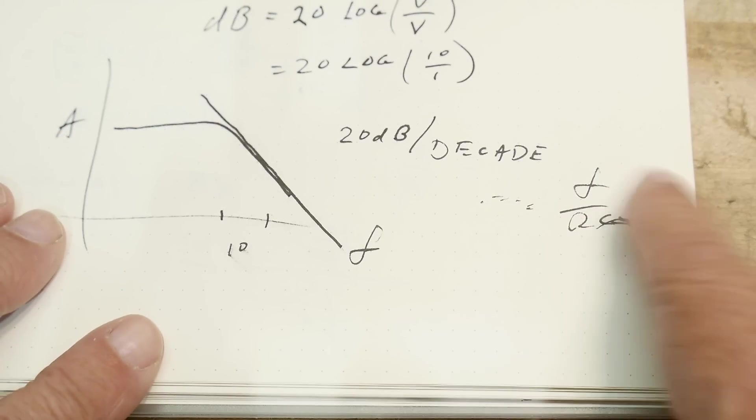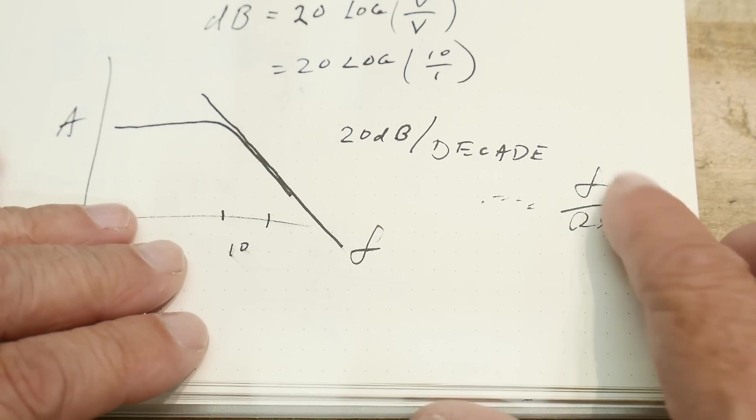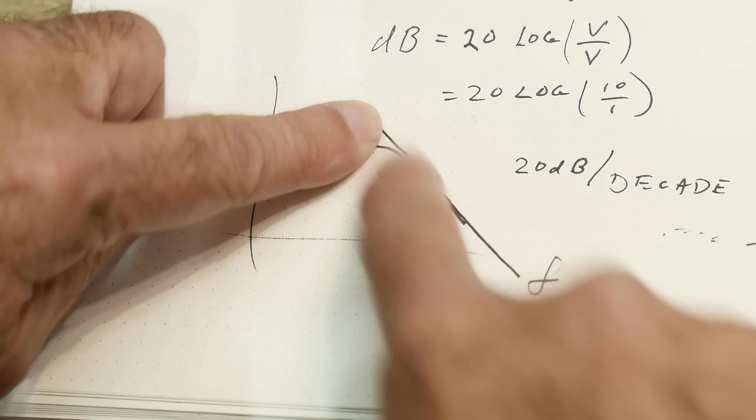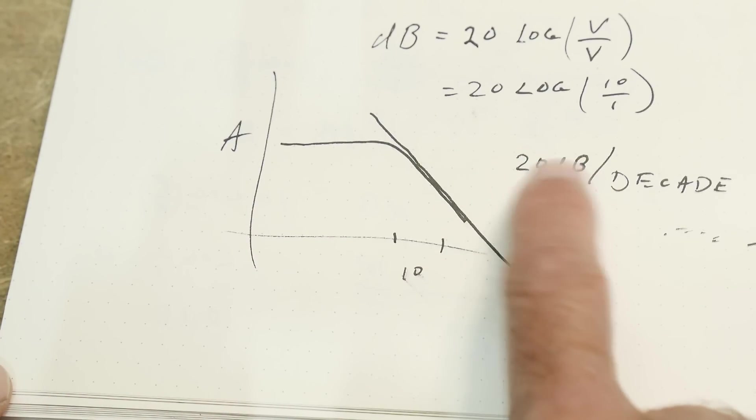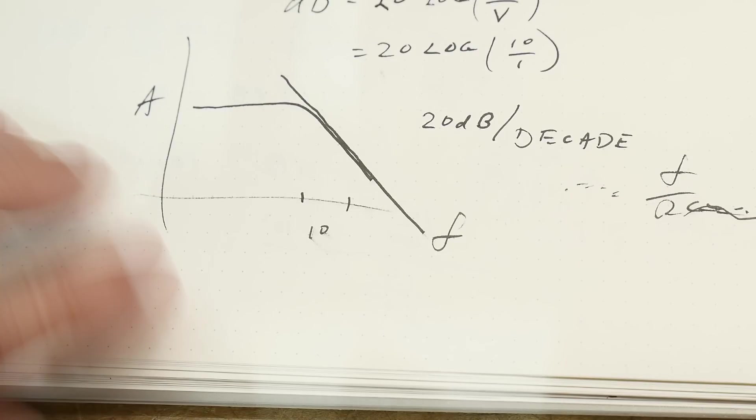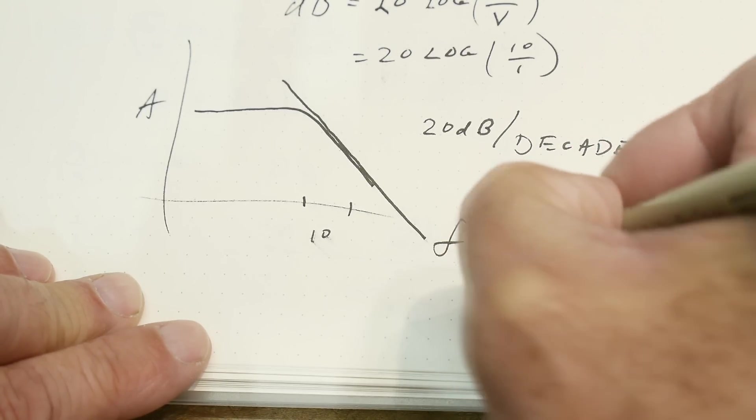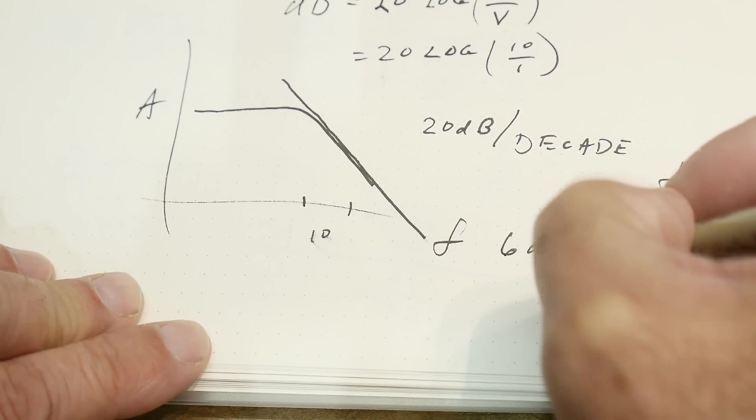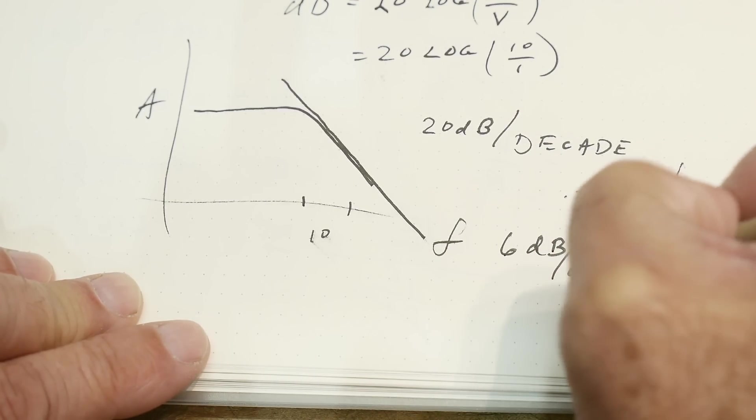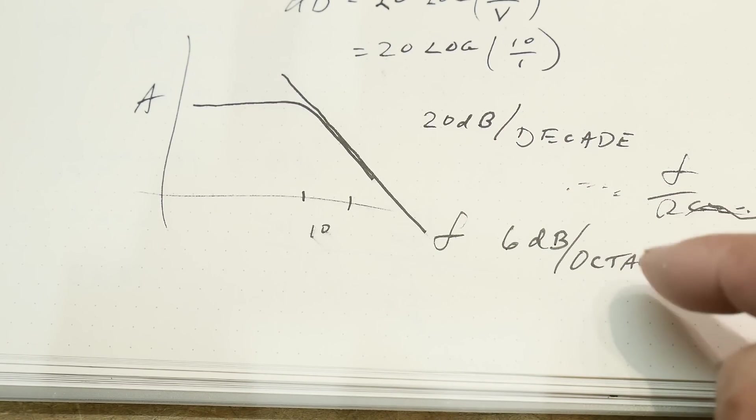If you have some type of device that has some gain that is a function of frequency, you'll get this times 10 is 20 dB of drop. You'll also hear 6 dB per octave.